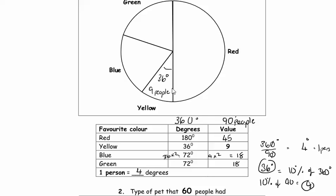We've got 18 people, 18 people, 45 people. If you add all the values together they should add up to 90 — that's a good check that you can do. Make sense?